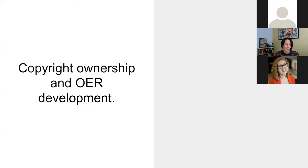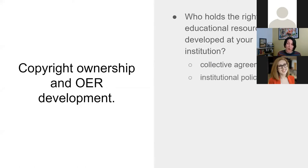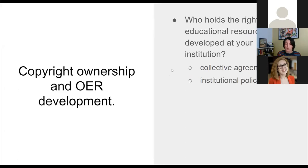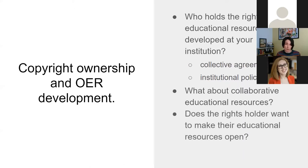As an academic librarian working with OER developers, the first thing to understand is who holds the rights in educational resources developed at your institution, as that informs what kind of open licences can be assigned. This information can sometimes be found in collective agreements or institutional policies. It may also vary for collaborative works — for example, at the University of Alberta, the Academic Staff Association and Support Staff Association have different IP and copyright language, which must be clarified before a licence can be assigned, since only the rights holder can assign a licence.